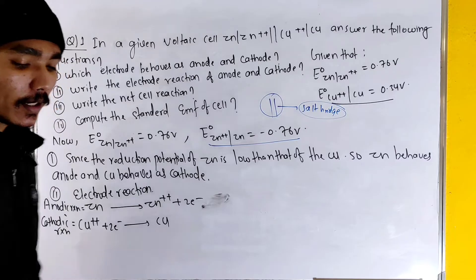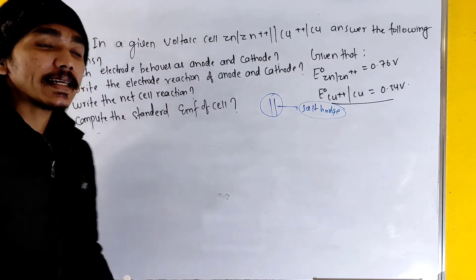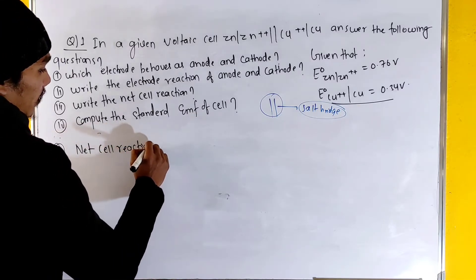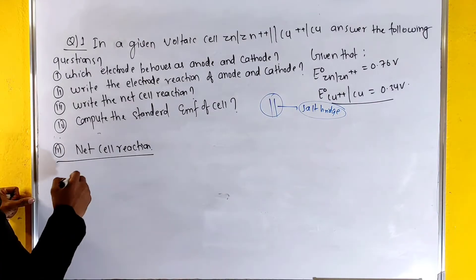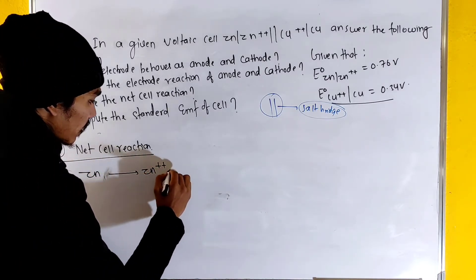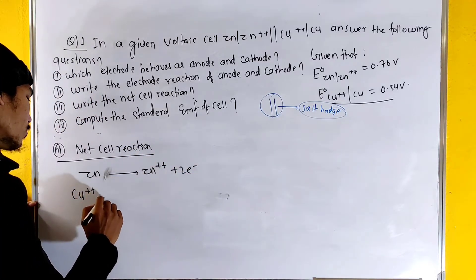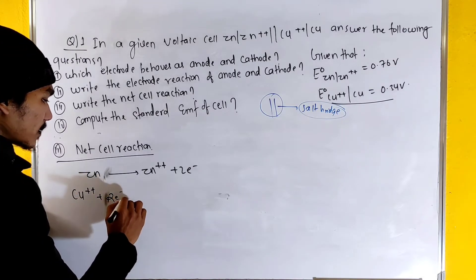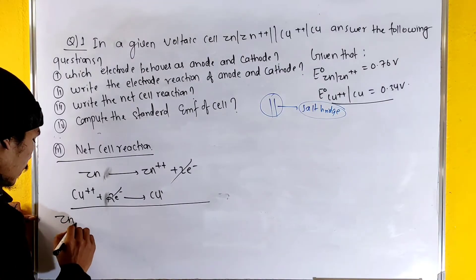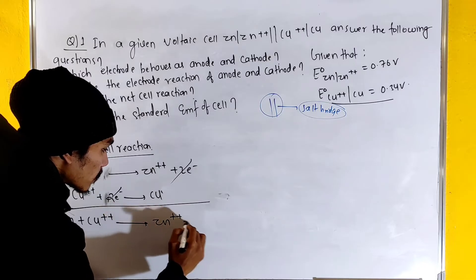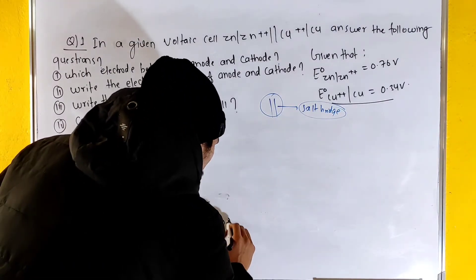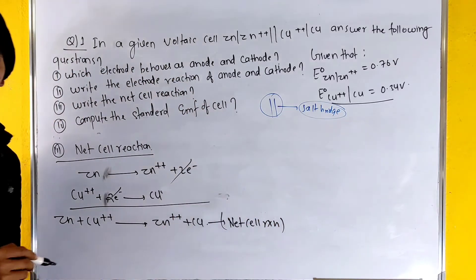The net cell reaction combines the anodic and cathodic reactions. Zn + Cu²⁺ → Zn²⁺ + Cu. The cathodic reaction is Cu²⁺ + 2e⁻ → Cu. After canceling the electrons, the net cell reaction is: Zn + Cu²⁺ → Zn²⁺ + Cu.